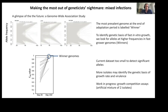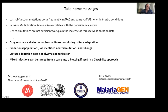In parallel, we are also performing artificial competition assays between each pair of clones, which will help us refine our phenotype. To recap the unpublished findings: drug-resistant alleles do not bear fitness costs during culture adaptation; from the clones, we identified neutral mutations and siblings from which we can derive the meiotic recombination rate; culture adaptation does not necessarily lead to fixation — it's a highly dynamic process; and these mixed infections can be turned to our advantage using a GWAS-like approach to identify novel gene function. I'd like to thank all co-authors and my PhD student Inayat for a last-minute figure. Thank you all for your attention.